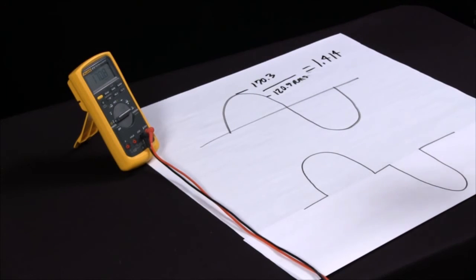Now we can all divide 120.9 into 170.3 and come up with 1.414. Yeah, maybe if we're Rain Man.